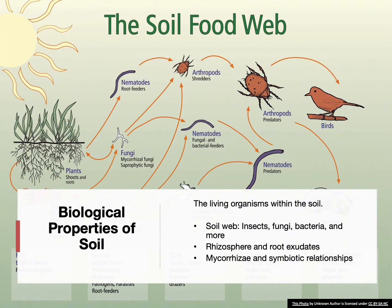Biological properties refers to the living organisms in the soil, like fungi, bacteria, earthworms, nematodes — all kinds of stuff. There are billions of living organisms in the soil. These organisms play a critical role in supporting tree health by breaking down organic matter and releasing nutrients.